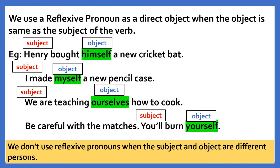We use a reflexive pronoun as a direct object when the object is the same as the subject of the verb. Look at the first sentence: Henry bought himself a new cricket bat. In this sentence, the subject is Henry and the object is himself. The word himself is a pronoun and it is the object of the sentence. Since the pronoun himself reflects back to the subject, it is therefore a reflexive pronoun.